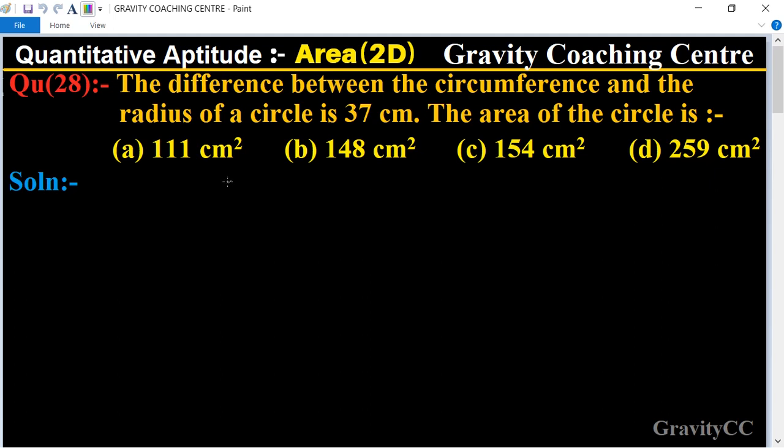Difference between circumference and radius equal to 37 centimeters. And the formula of circumference is 2πr minus r equal to 37.